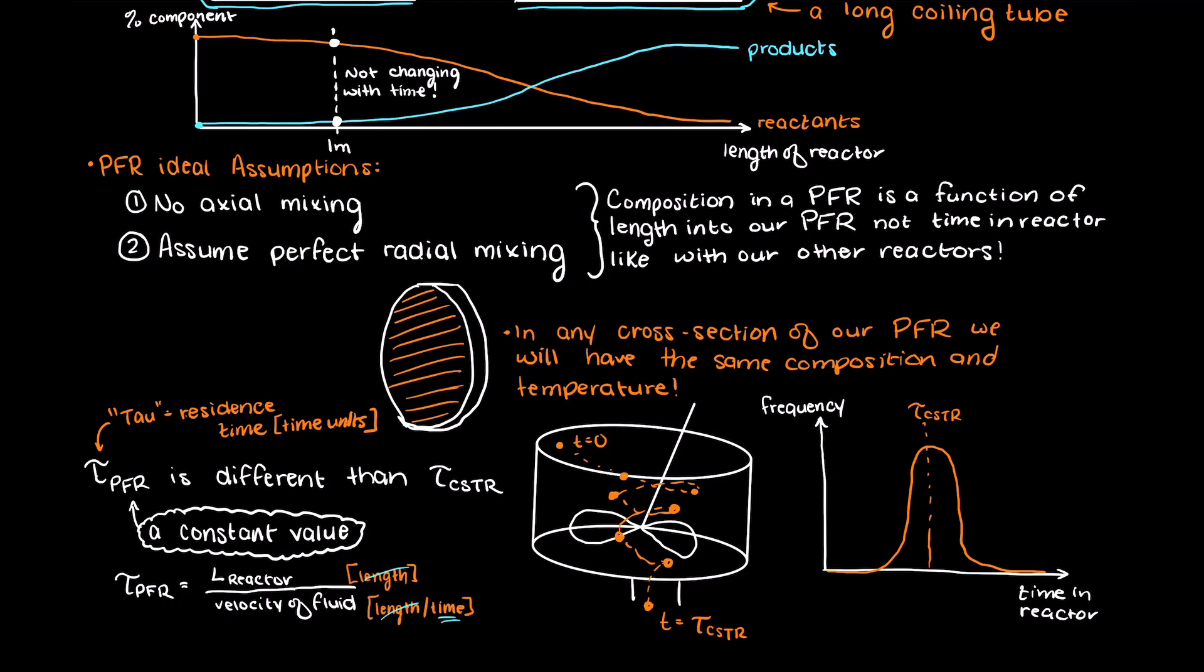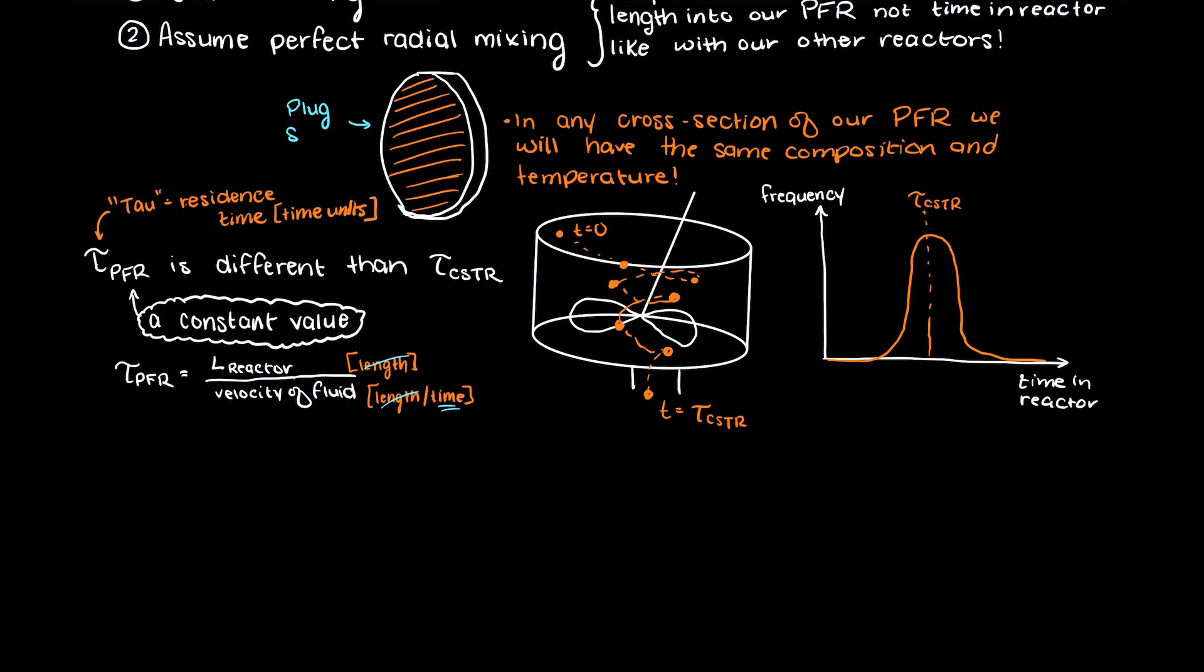This is why we call it a plug flow reactor. You can imagine this little plug shape here acting as an infinitesimally small CSTR, and by stringing our infinite amount of CSTRs together we get a plug flow reactor.